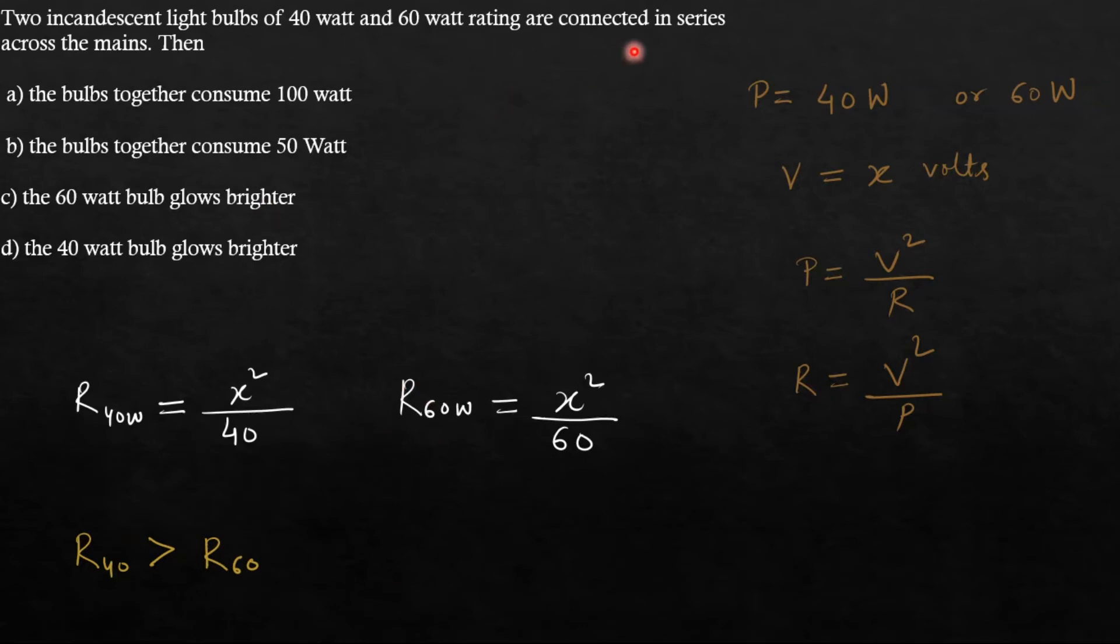Now it is said that they are connected in series. That is 40 Watt bulb and 60 Watt bulb are connected in series. Now we know that the current in both the bulbs will be same as they are connected in series.